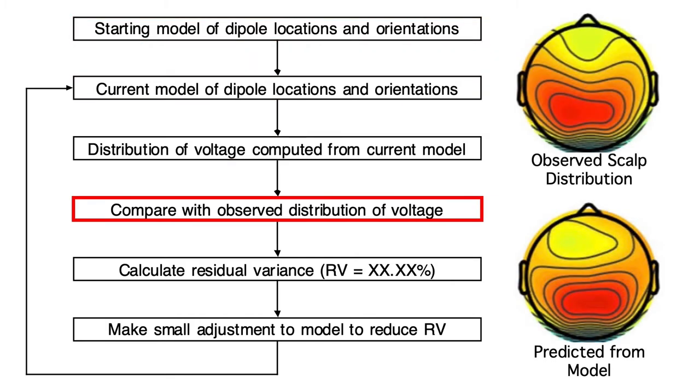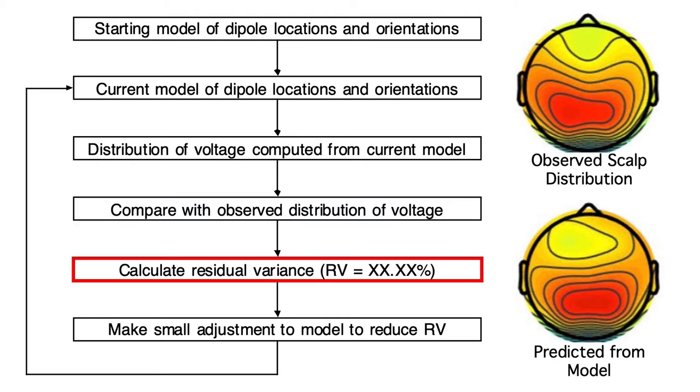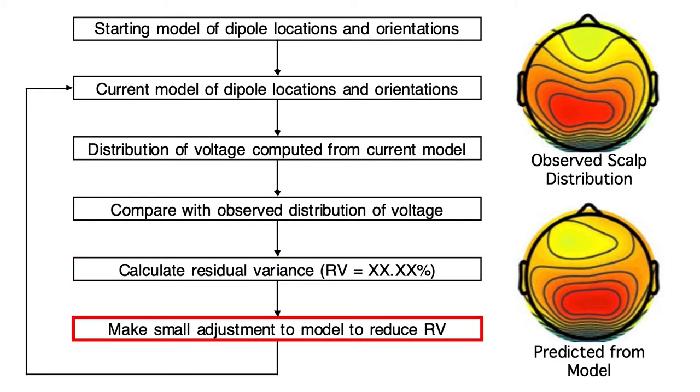You compare this with the observed scalp distribution and see how much error you have. This is done for every time point, and the aggregated error across time points is called the residual variance. The locations and orientations are then adjusted slightly to reduce the residual variance, generating a new model. This procedure is iterated until the residual variance reaches a low and stable level.